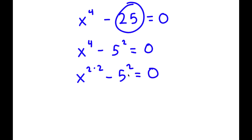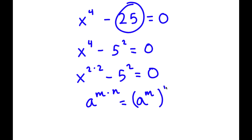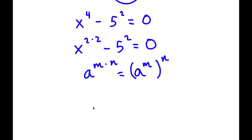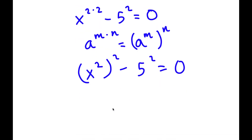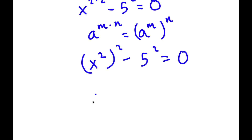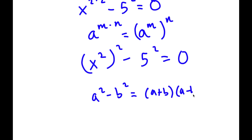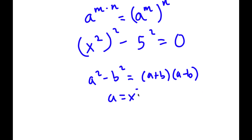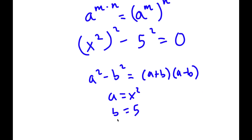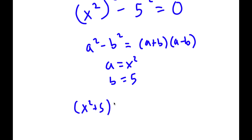If I have something in the form a to the power of m times n, this is equal to a to the power of m, to the power of n. So x to the power of 2 times 2 I can write as (x squared) squared. Now I have (x squared) squared minus 5 squared, and if I have something in the form a squared minus b squared, this equals (a plus b)(a minus b). Here a is x squared and b is 5, so I get (x squared plus 5)(x squared minus 5) equals 0.